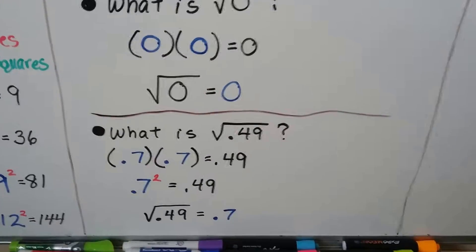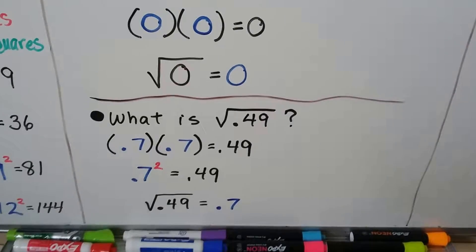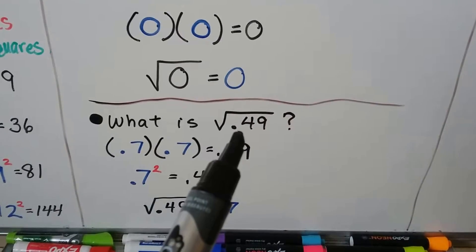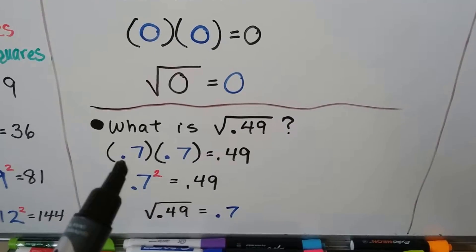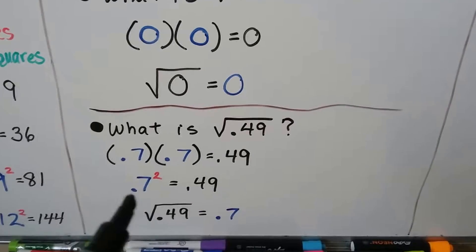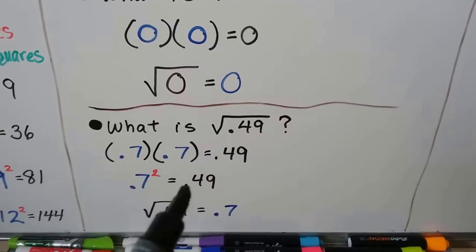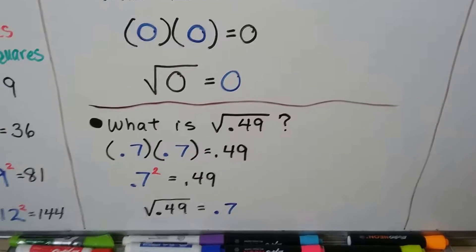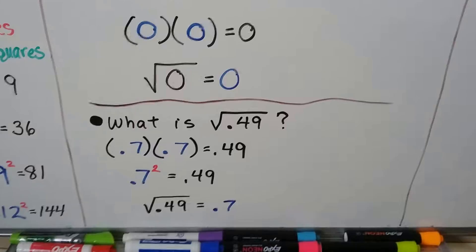We can even do it for fractions and decimals. So, rational numbers. The square root of 49 hundredths? Well, 7 tenths times 7 tenths equals 49 hundredths. That means 7 tenths squared equals 49 hundredths. So, the square root of 49 hundredths is 7 tenths.